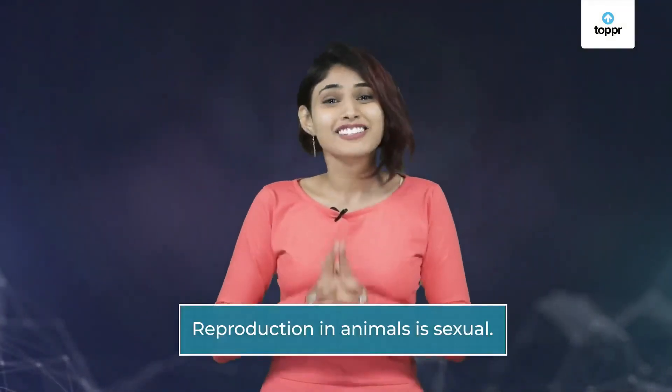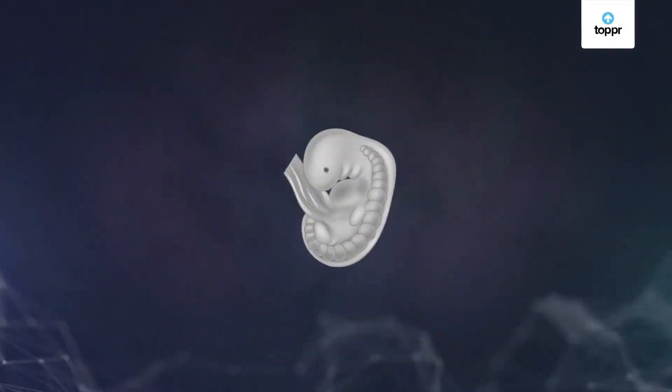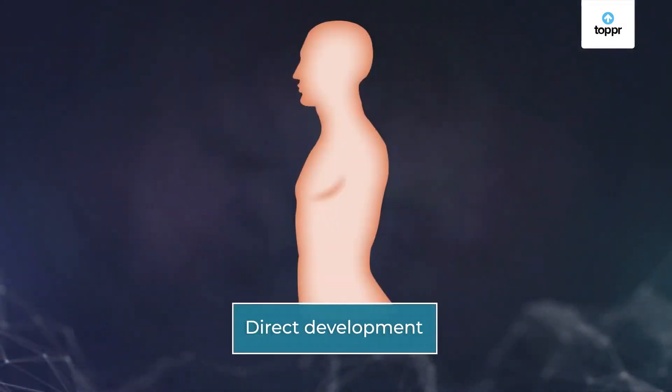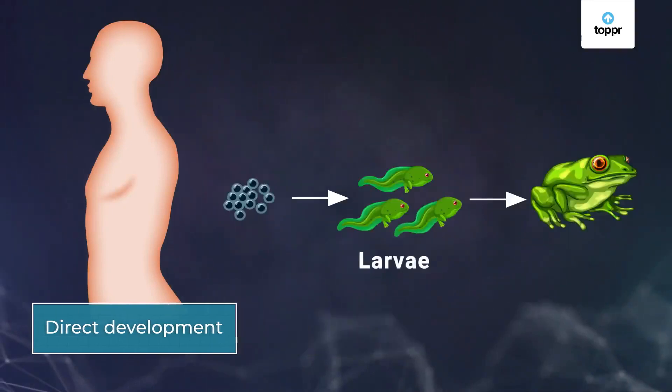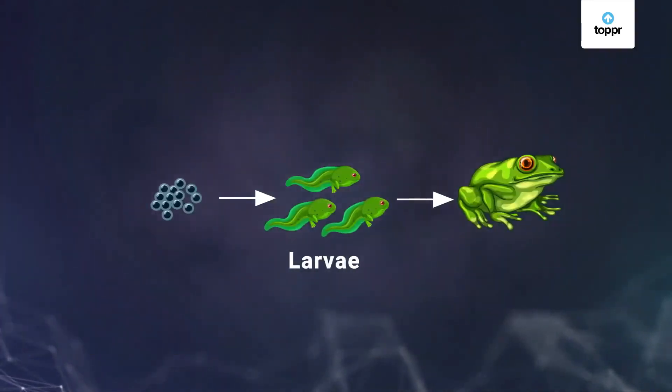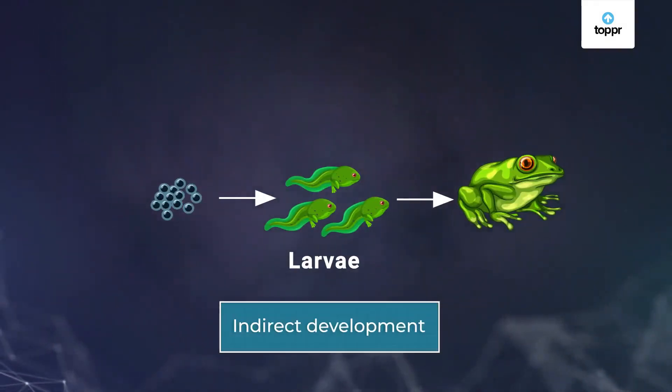What do all organisms do to make their race survive on Earth? They reproduce. All animals reproduce and their mode of reproduction is sexual. The development of their embryo is either direct, like us humans, or may involve a larval stage, like in the case of frogs. When the development includes a larval stage, it is called indirect development.